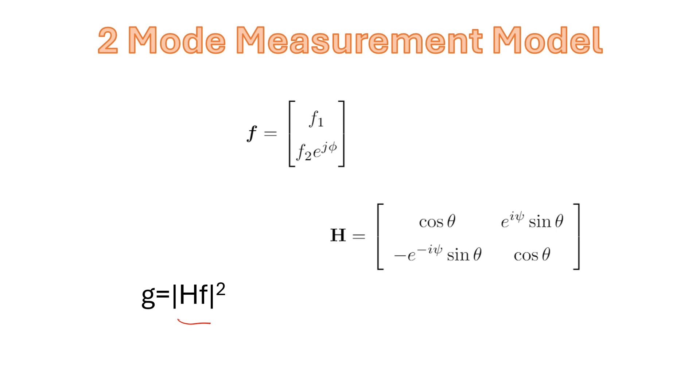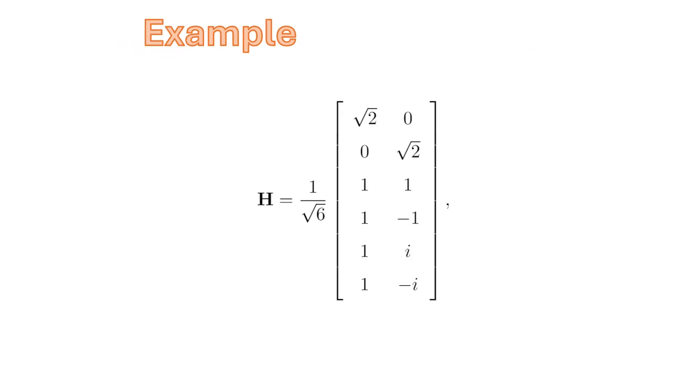Now if we make only two measurements to recover the three values F1, F2, and phi, we'll find that would be challenging. So we make this measurement for multiple settings of the interferometer. For example, here we've got three different settings. In the first case, we would measure just the magnitude of F1 and the magnitude of F2 with this value of H. Then we make a second measurement where we measure the sum of the modes and the difference of the modes. And then we measure mode one plus mode two delayed by pi and mode two delayed by minus pi. We normalize this whole thing so that as we make multiple measurements, we're using the same amount of total power.